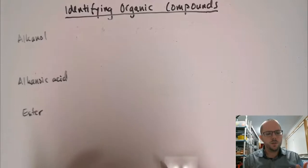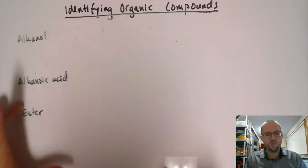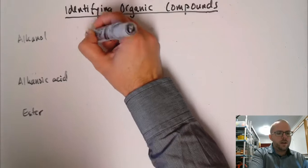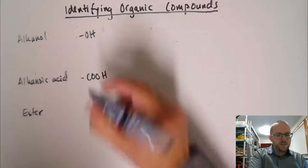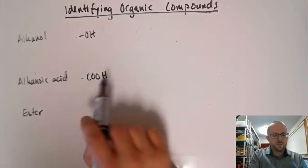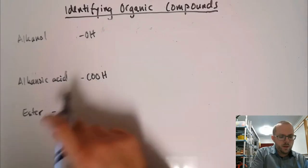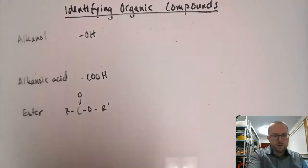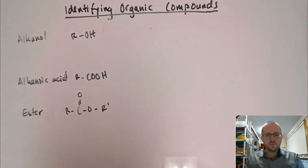The next three families that we're going to look at are alkanols, alkanoic acids, and esters. These three are all related to one another. So the functional group for alkanol is where we've got our hydroxy or OH group. For alkanoic acid, we've got the presence of a carboxylic acid group, COOH. And then for the ester, we've got the COO group in between two carbons.